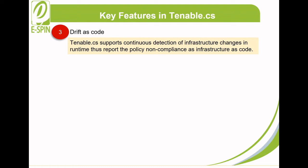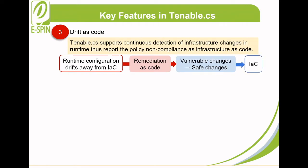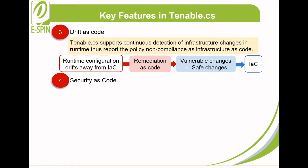In an incident where runtime configuration drifts away from the infrastructure as code, remediation as code will revert the vulnerable changes to propagate the safe changes back to the infrastructure as code. Tenable CS also gives advanced security by identifying and assessing potential breach paths and blast radius to understand vulnerabilities and prioritize risk resolution.